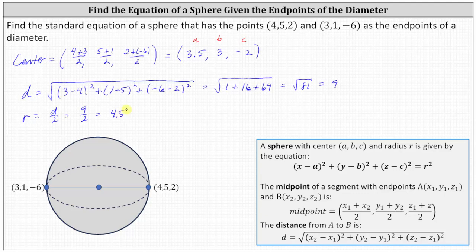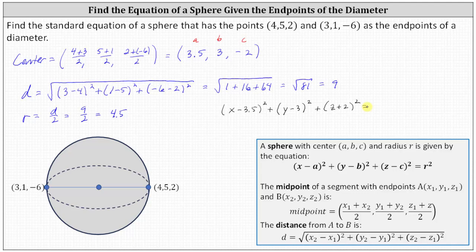Now we have all the information needed to determine the equation of the sphere. (x minus a) squared gives us (x - 3.5) squared, plus (y minus b) squared gives us (y - 3) squared, plus (z minus c) squared, which is (z minus negative 2) squared, simplifying to (z + 2) squared. On the right side, it's r squared, giving us 4.5 squared, which equals 20.25.